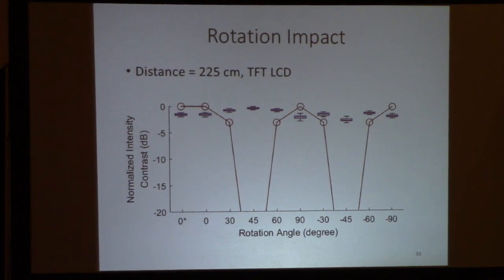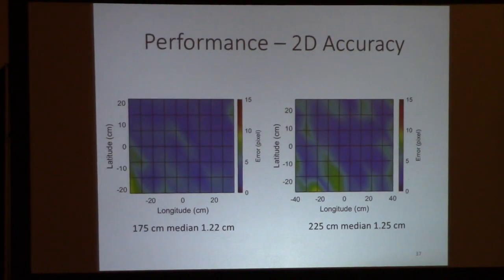This figure shows how our solution corrects the signal drop or contrast drop caused by receiver rotation. The box plot shows that we can achieve a flat contrast across all rotation angles.